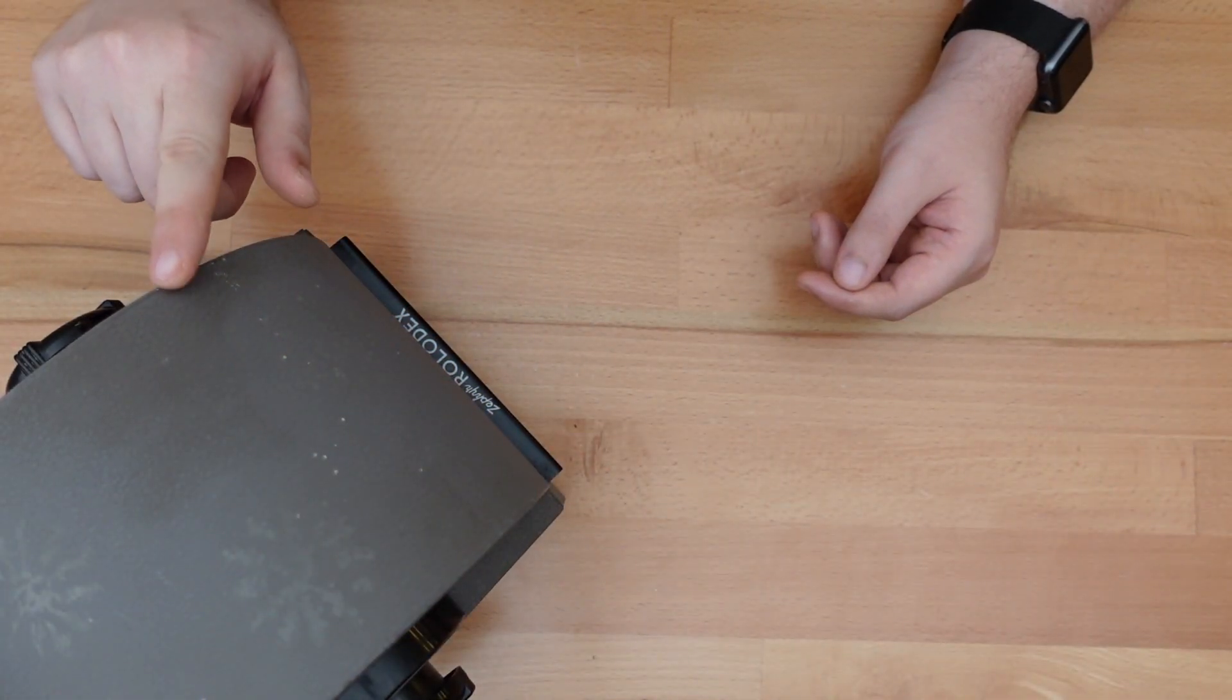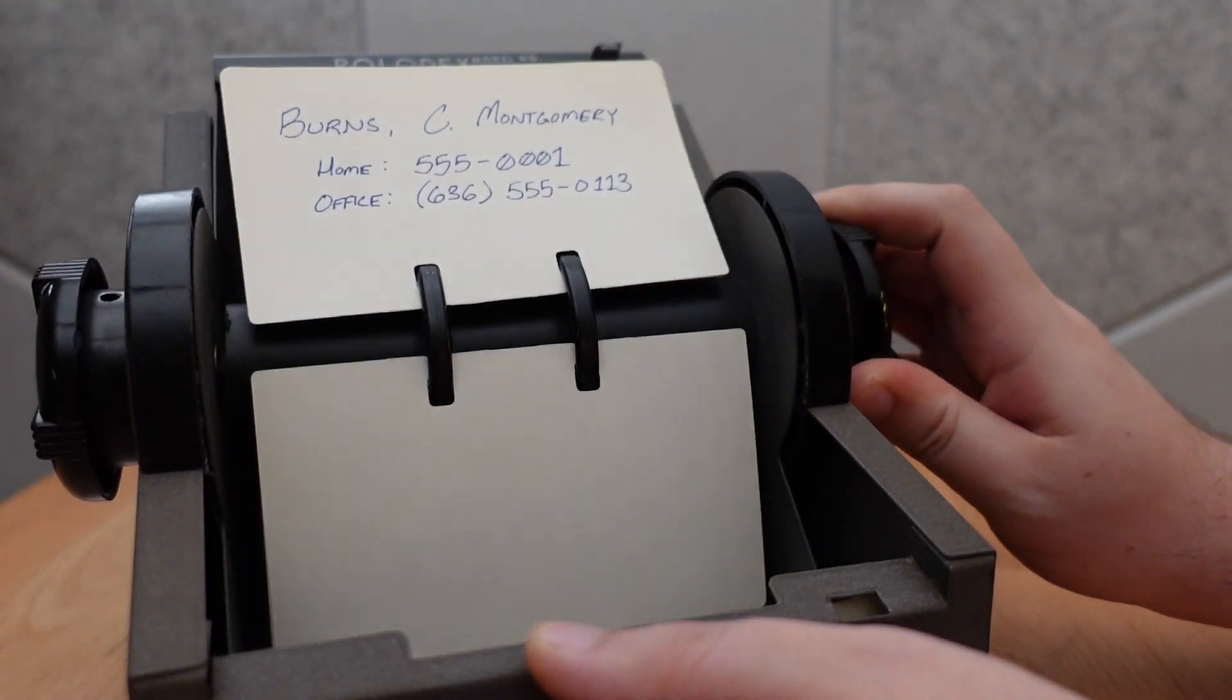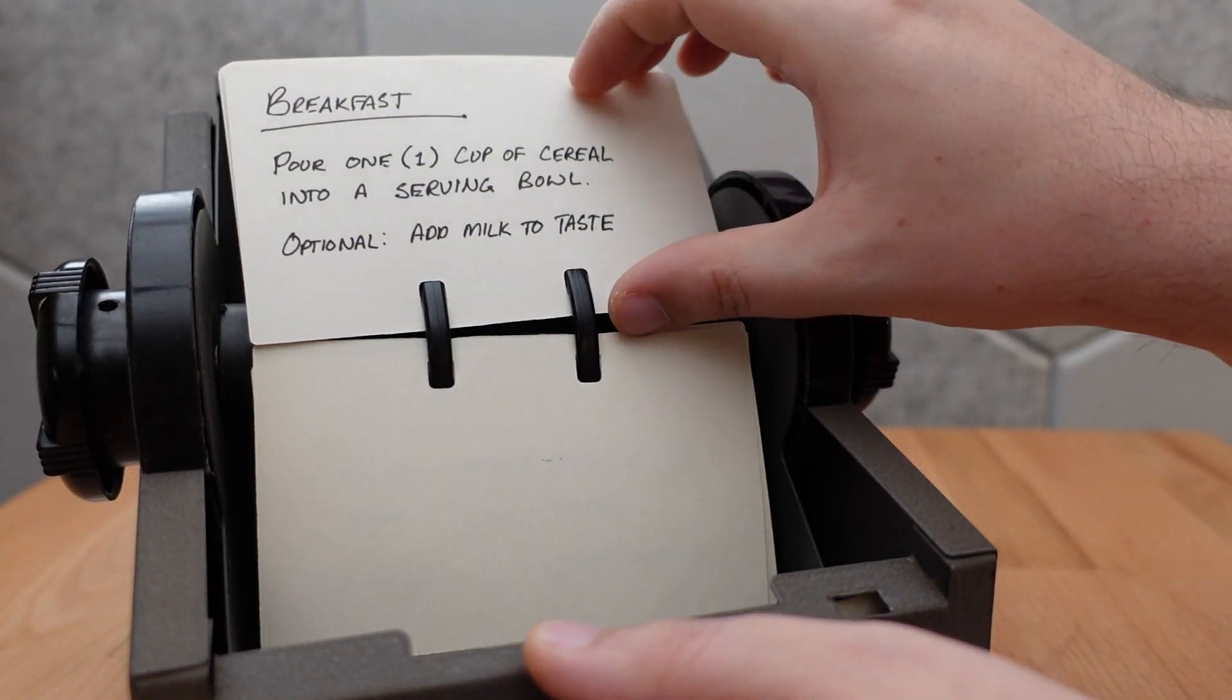Thanks for dropping in. Remember these things? Before smartphones, a Rolodex was the go-to device to store phone numbers, business cards, receipts, and more.